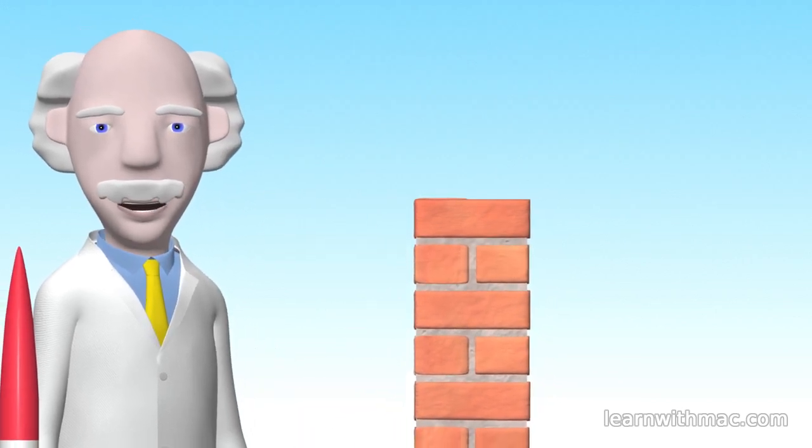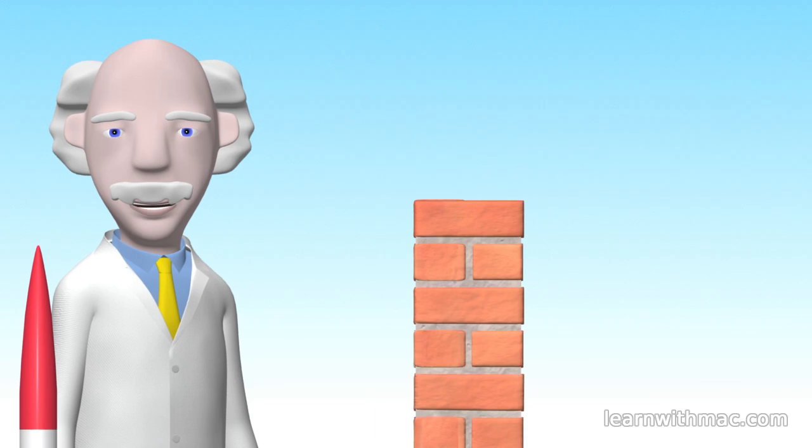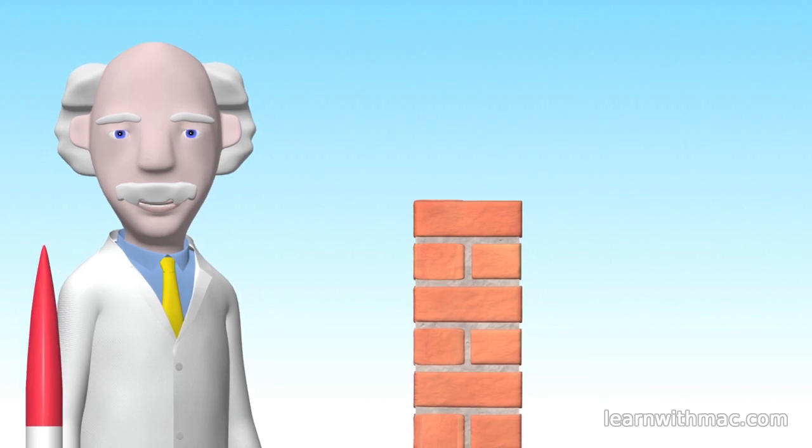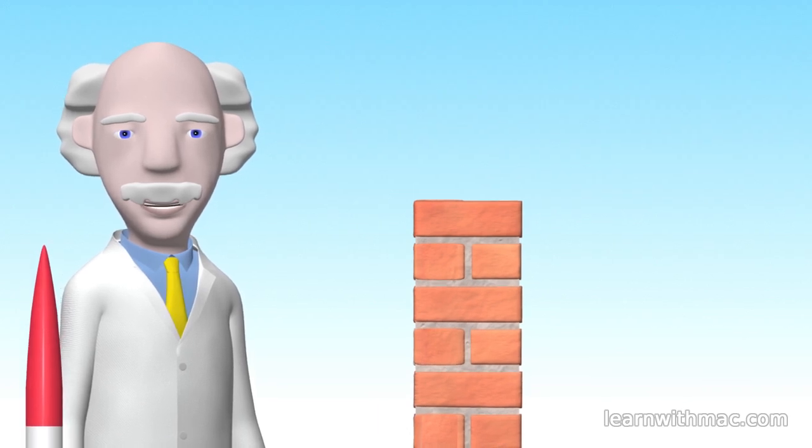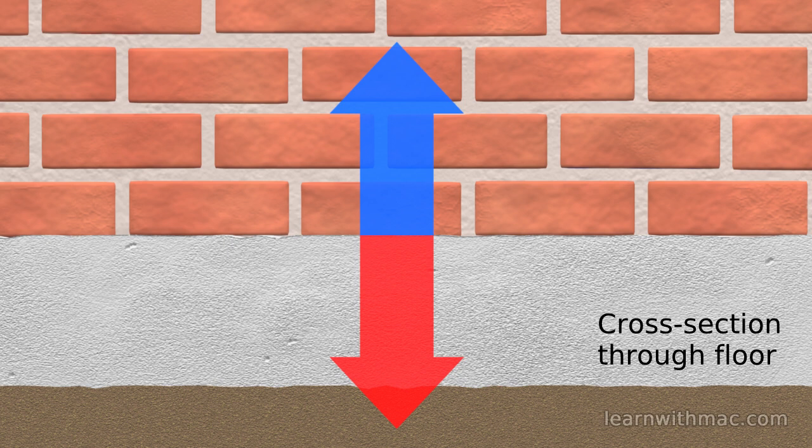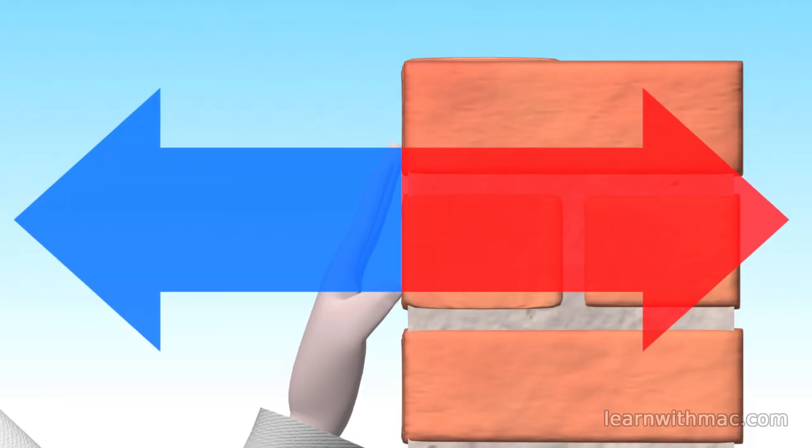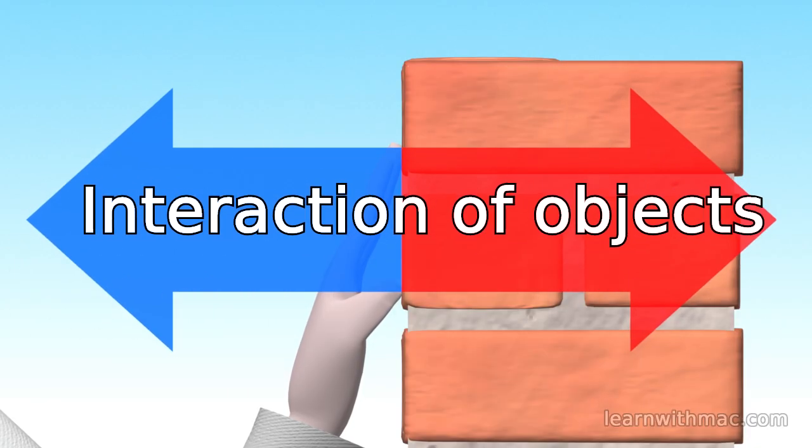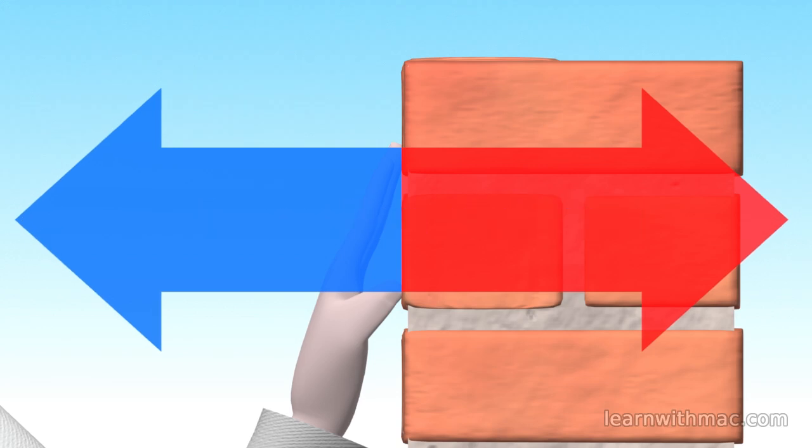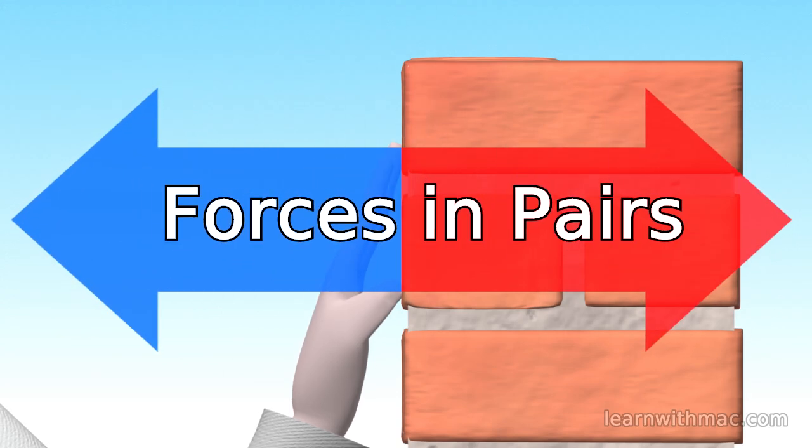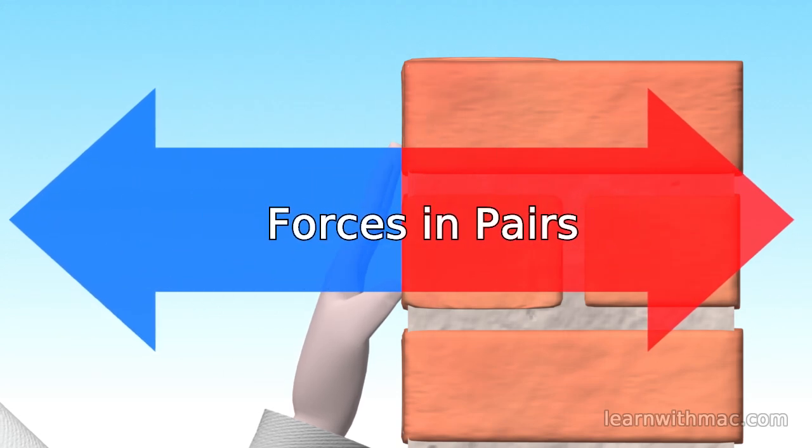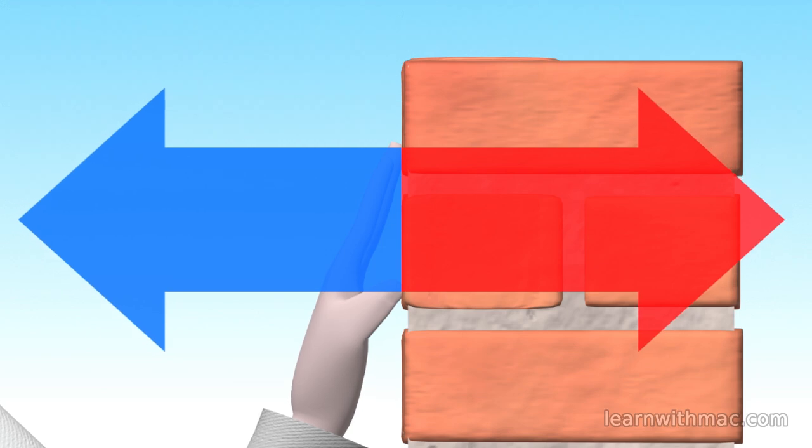It is also important to realize that forces are not just generated by live objects such as you and me. Inanimate objects such as the floor or the wall here generate forces. Forces result from the interaction of objects and Newton's third law tells us that the forces appear in pairs. Hence the phrase action and reaction.